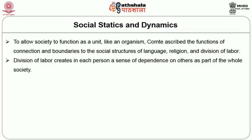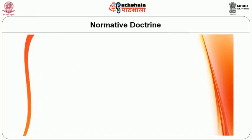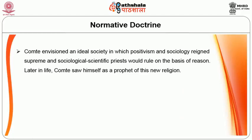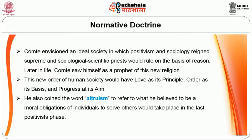Division of labor creates in each person a sense of dependence on others as parts of the whole society. Normative doctrine: Auguste Comte envisioned an ideal society in which positivism and sociology reigned supreme and sociological scientific priests would rule on the basis of reason. Later in his life, Comte saw himself as a prophet of the new religion. This new order of human society, he believed, would have love as its principle, order as its basis, and progress as its aim. He coined the term altruism because he believed that moral obligations of individuals to serve others would take place in this last positivist phase.